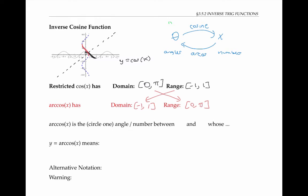For example, cosine of pi over four is the square root of two over two. So arc cosine of the square root of two over two is equal to pi over four. Arc cosine of x is the angle between zero and pi whose cosine is x.